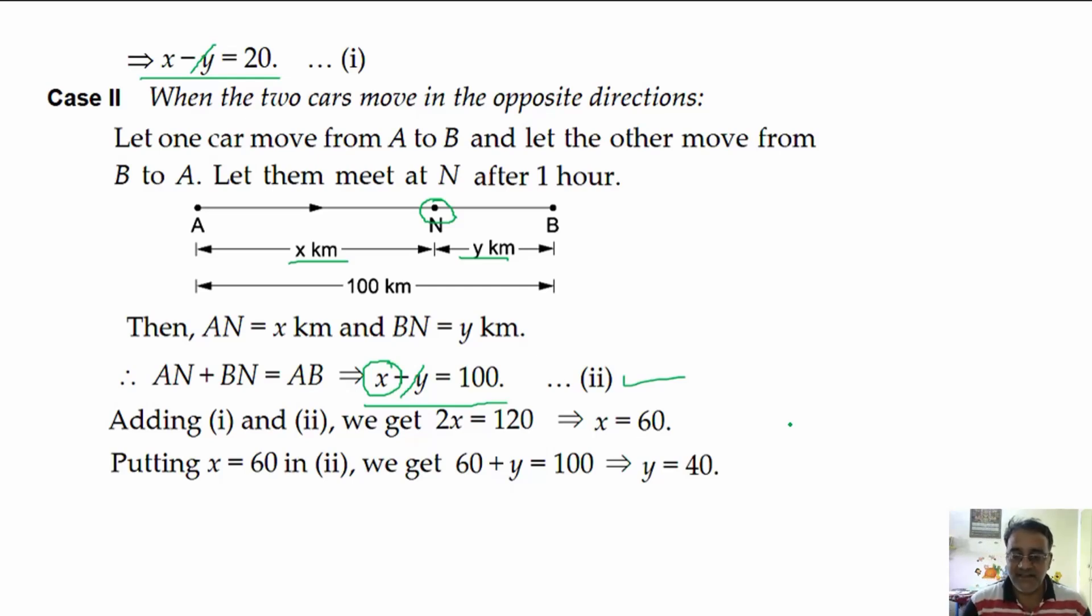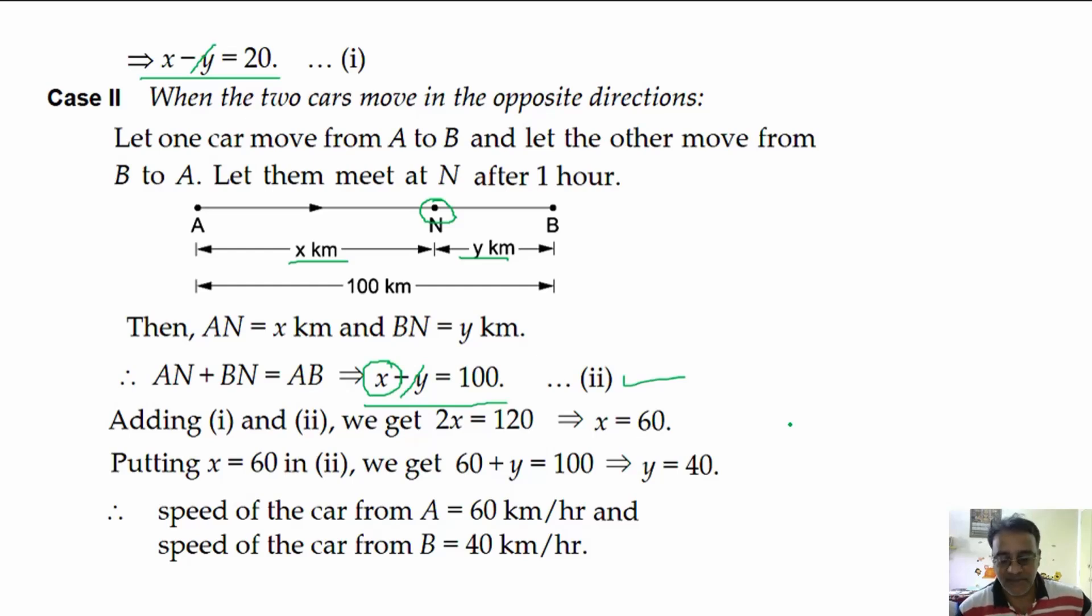Hence the speed of the car from A is 60 kilometer per hour and speed of the car from B is 40 kilometer per hour. Any doubt in this question? No sir.